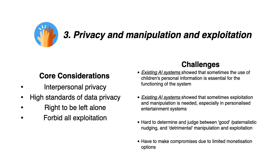The third principle is privacy, manipulation, and exploitation. To protect children's privacy online refers to respecting their interpersonal and data privacy online, as well as taking precautions to forbid the use of their data to exploit them. On the other hand, sometimes the use of children's data and subsequent manipulation were actually essential for the functioning of the system, and it could be hard to determine what counts as good or detrimental nudging and manipulation.